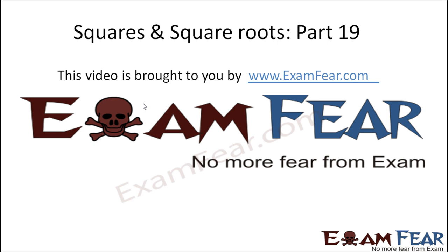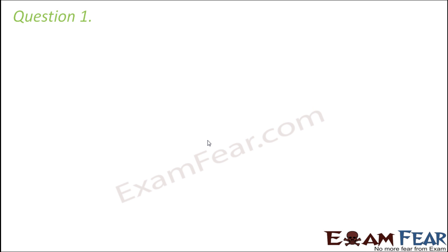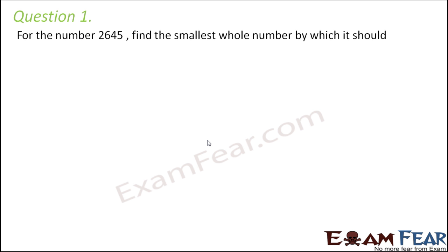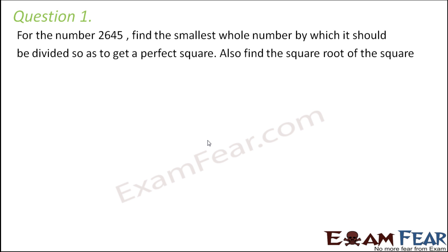Hello friends, this video on squares and square roots part 19 is brought to you by examfear.com. No more fear from exam. Question number 1: for the number 2645, find the smallest whole number by which it should be divided so as to get a perfect square. Also find the square root of the square.